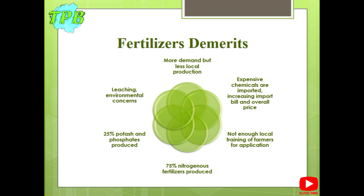The demand for nitrogenous fertilizers in Pakistan is 75 percent of production, while potash and phosphates are 25 percent of production. Chemical fertilizers not only affect the capital invested in the farm but also damage the environment. Continual use may result in leaching, where the topsoil loses all its nutrients which then subside into the subsoils. Chemical fertilizers also become part of the water cycle and may cause acid rain later in the year.